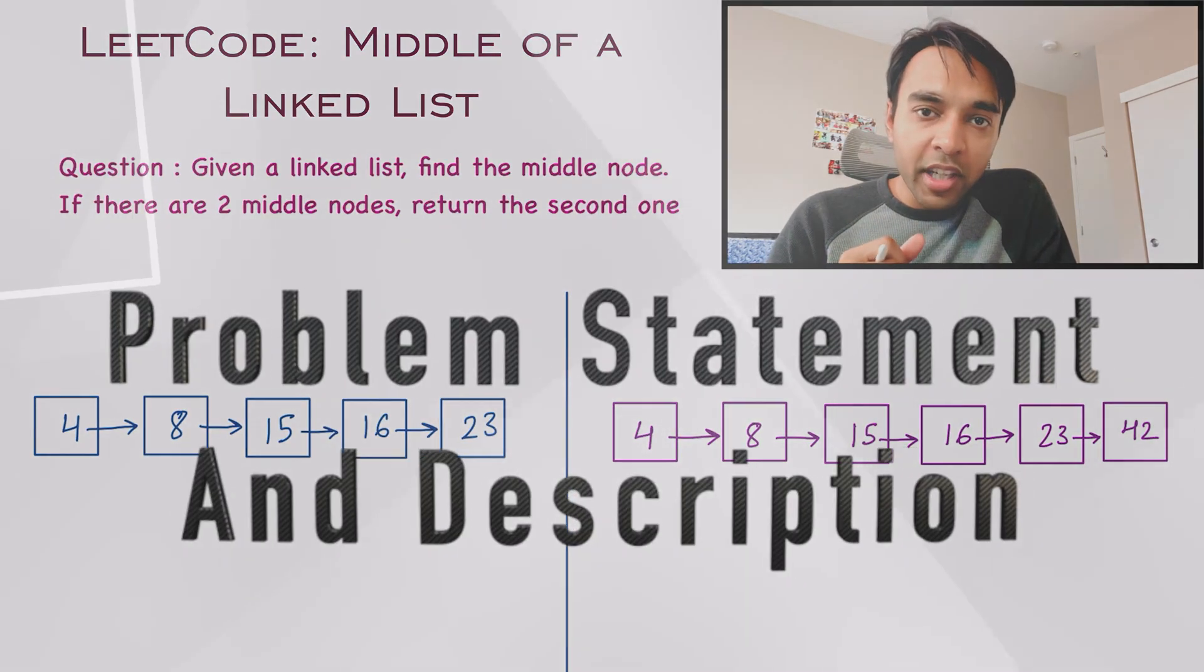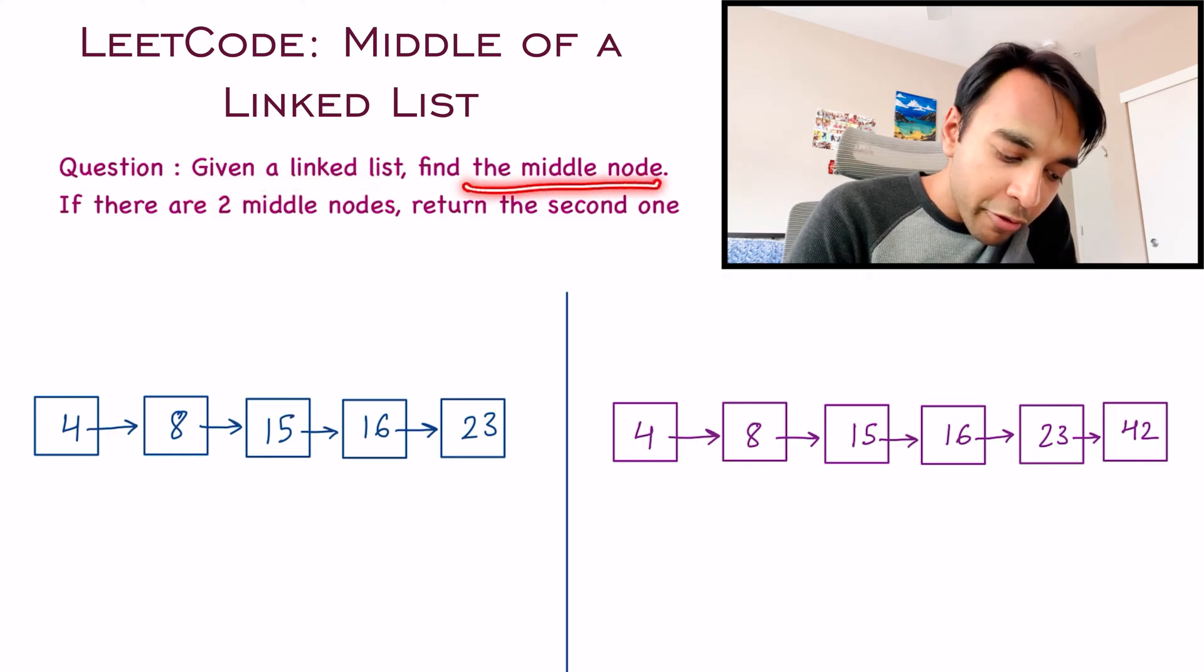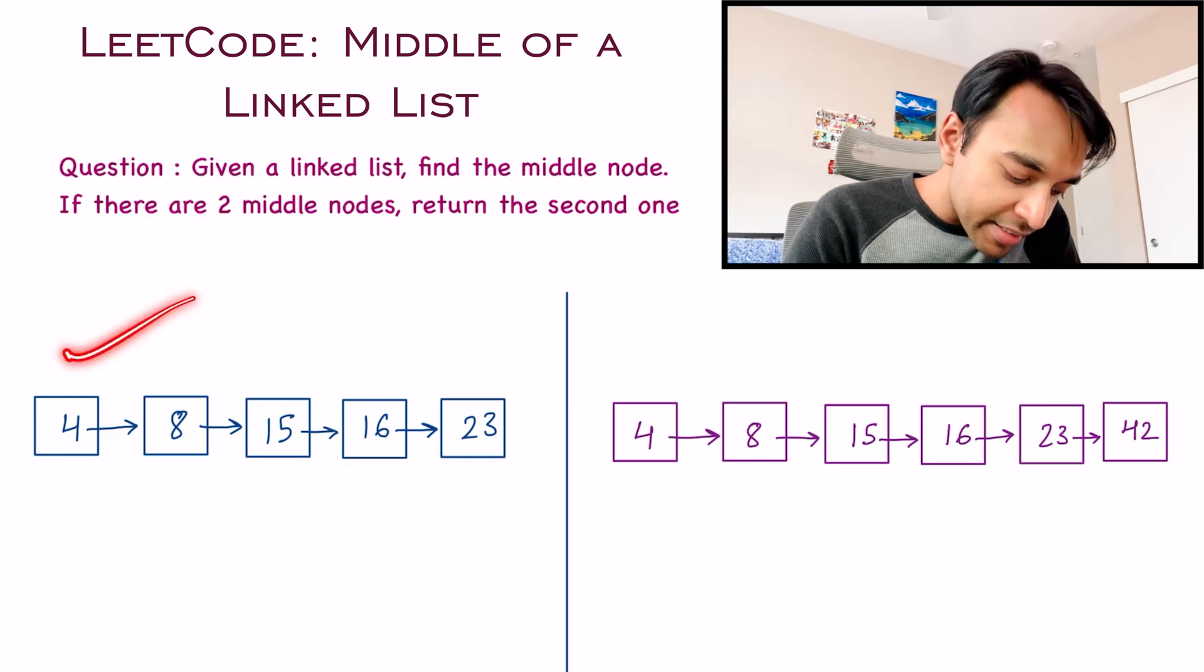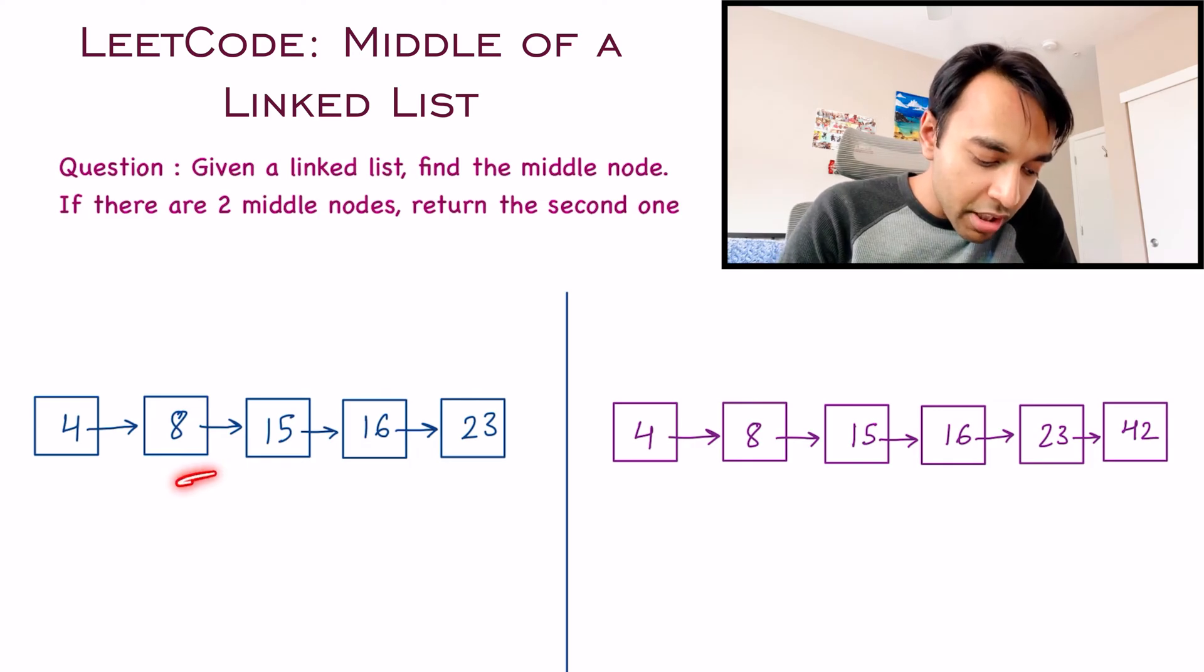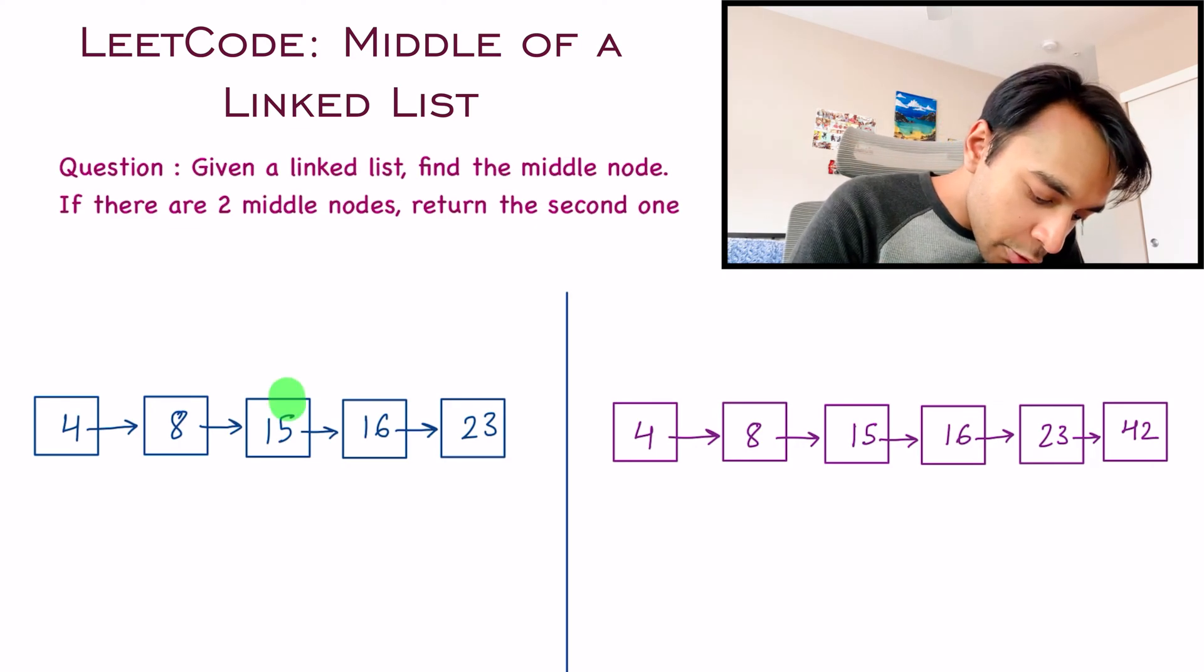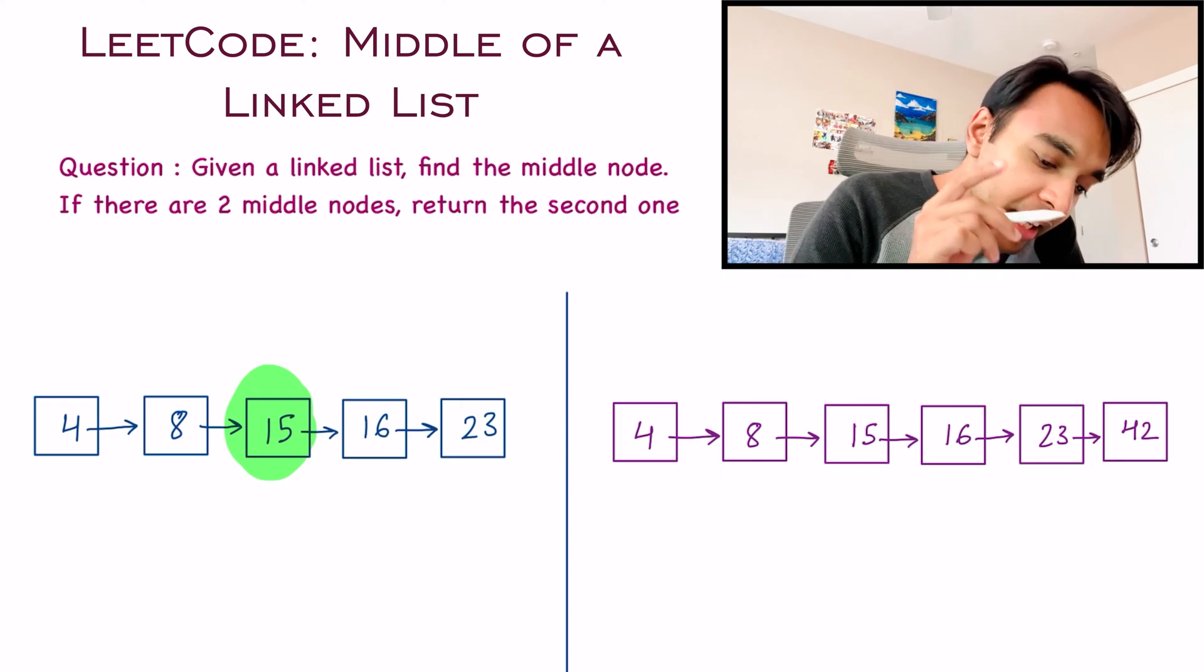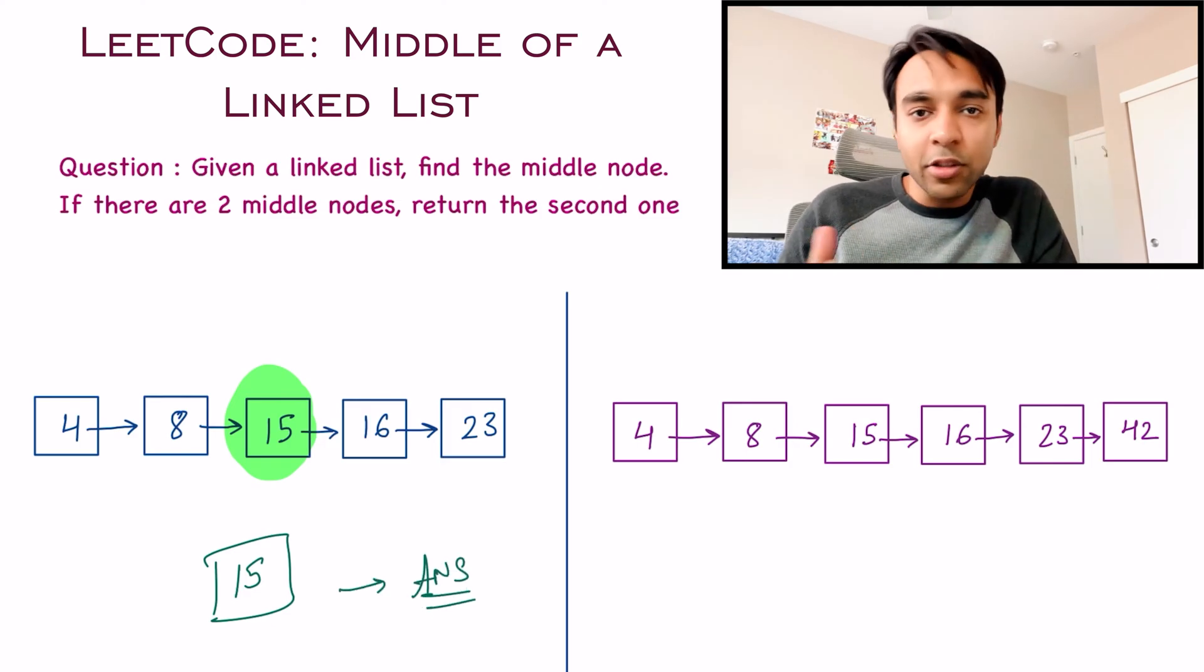Let us quickly make sure that we are understanding the problem statement correctly. You are given a linked list and you have to find the middle node. And if there are two middle nodes, you need to return the second one. Let us understand it with our sample test cases. For test case number one, you can see that I have a linked list that has five nodes. Now if you look at it, what will be the middle element? If you notice, this 15 is the middle element. Because on the right you have two nodes and on the left also you have two nodes. So in this test case, you need to return this node as your answer. This is your middle node.